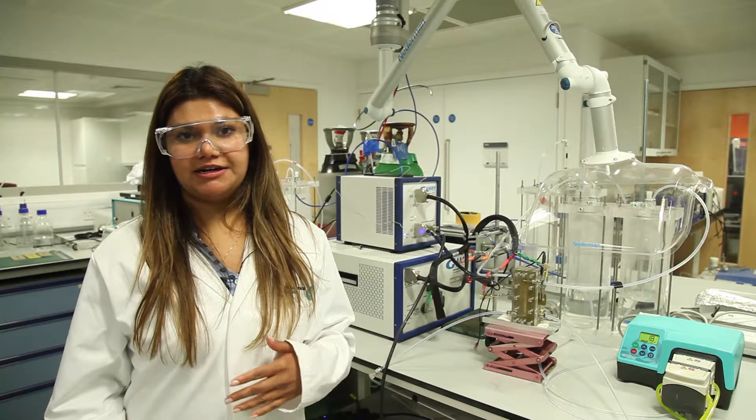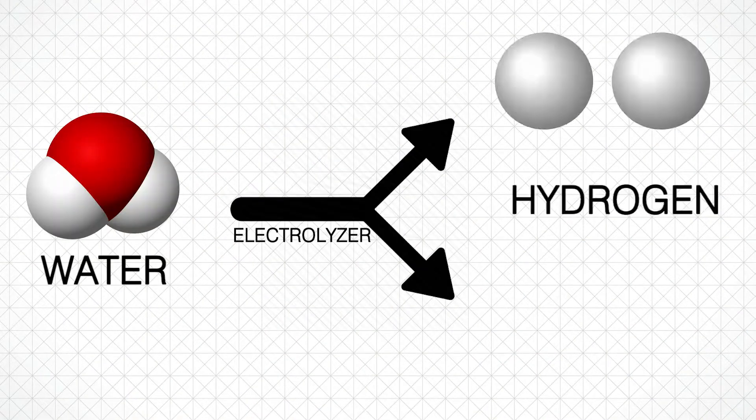Electrolysers operate reverse to a fuel cell. In electrolysers, you have water coming in that splits into hydrogen and oxygen.